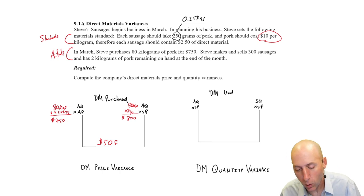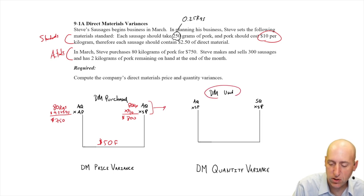Let's move over to the quantity variance. AQ times SP. Again, we can't just use these same numbers because it's about materials used, not about materials purchased, but about materials used. So what's the actual quantity of material used?